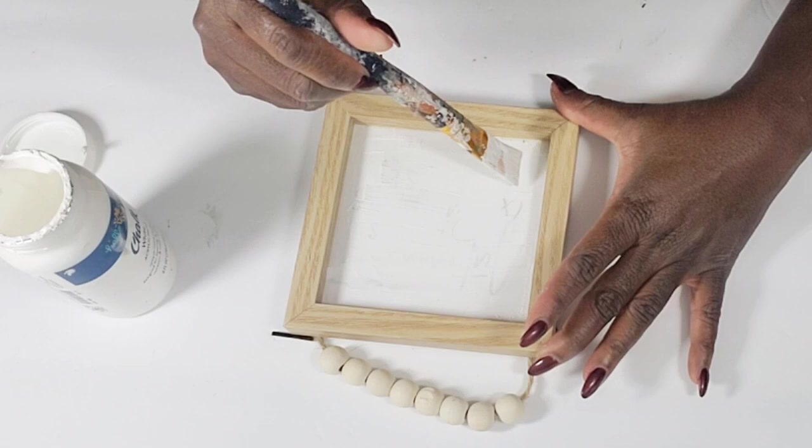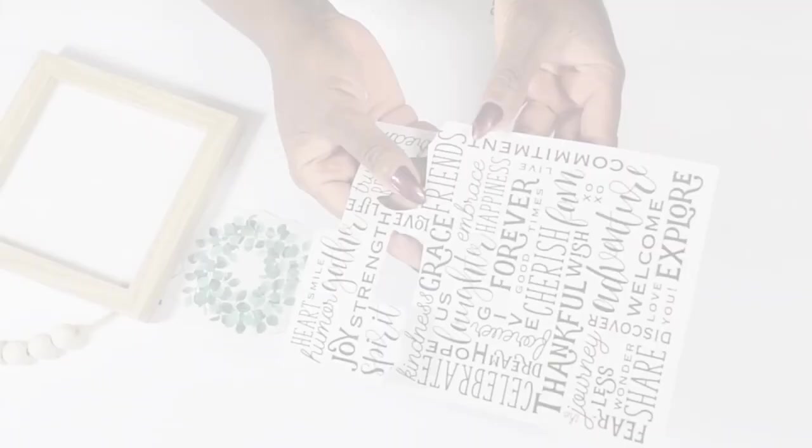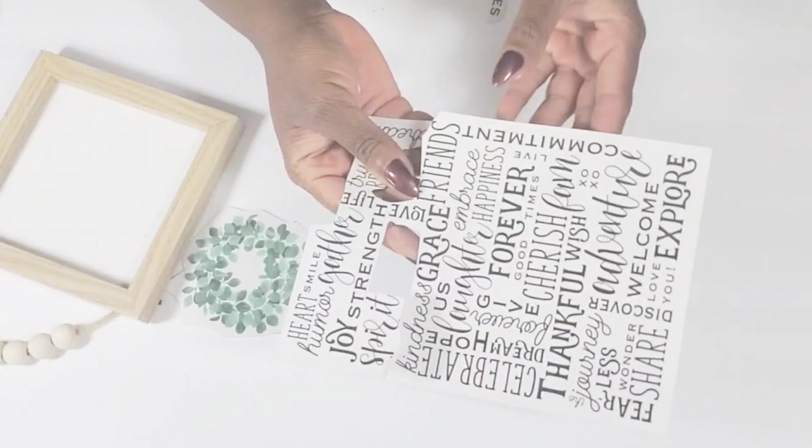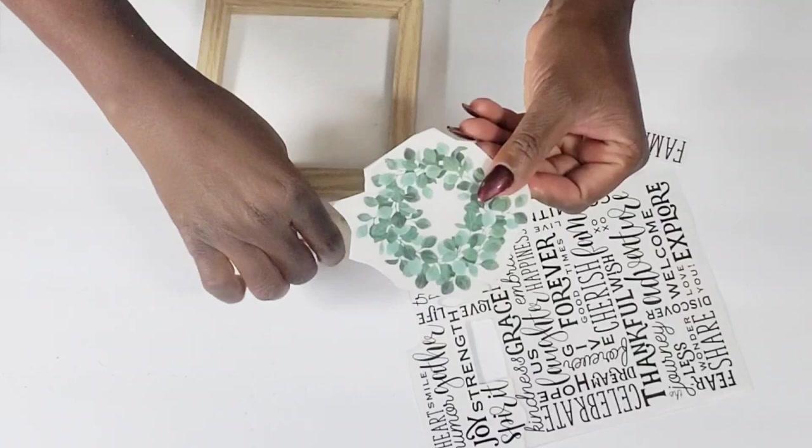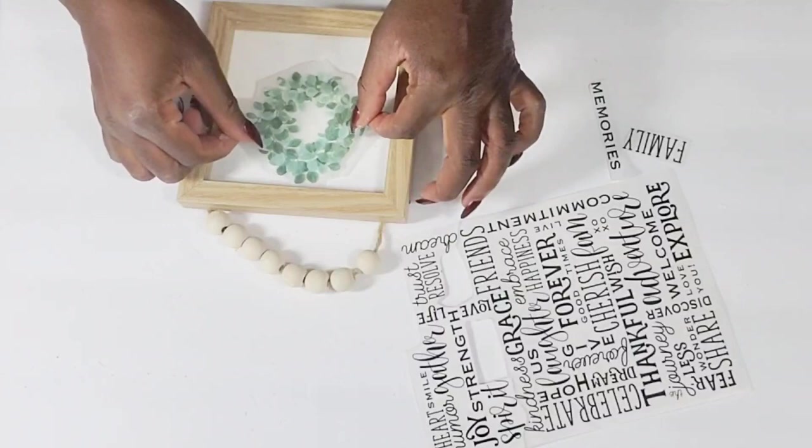Now what I'm going to do is be using some Dollar Tree transfer stickers. I have these words and I cut out two words and then I have this Dollar Tree transfer wreath. I absolutely love these. These are some of my favorite stickers from the Dollar Tree. And I'm just going to place this wreath right in the inside and just transfer it over.